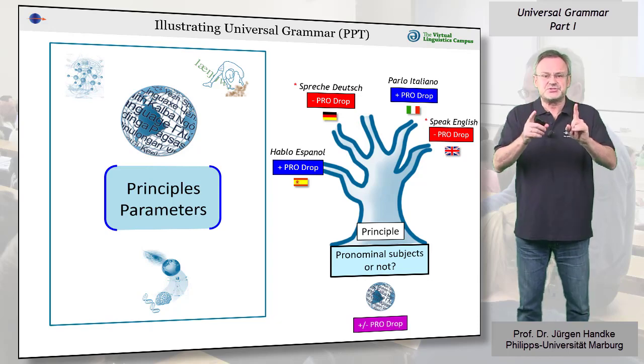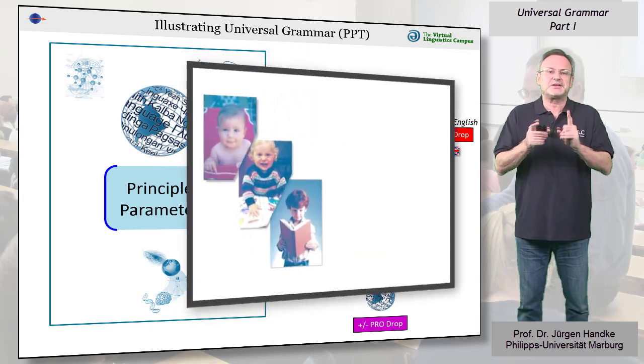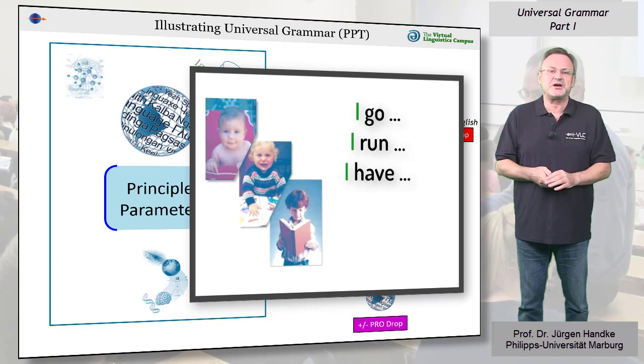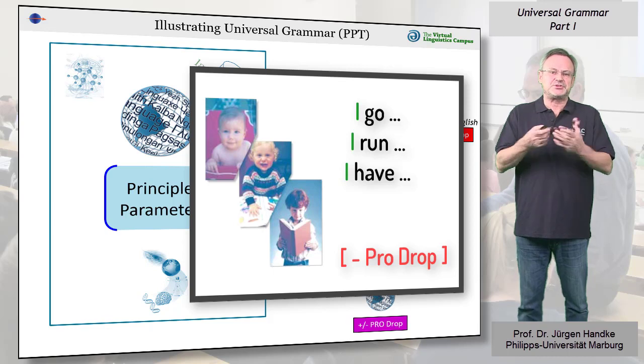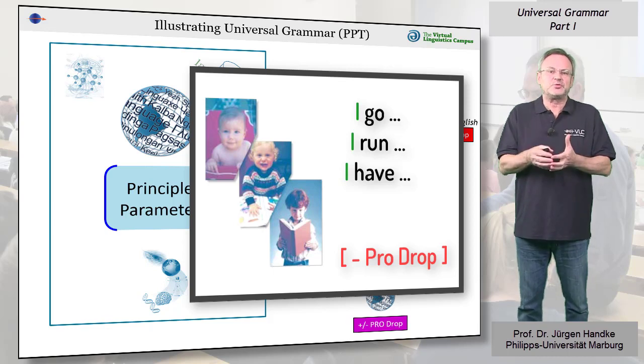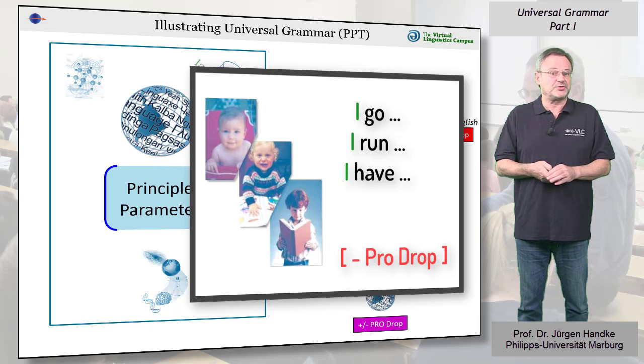The idea is, as soon as children encounter few sentences of this type, this PRODROP parameter would be set and the children would know whether they could drop the subject in these sentences or not.